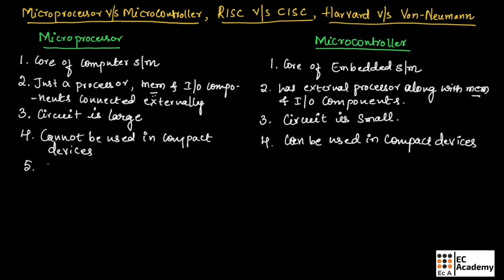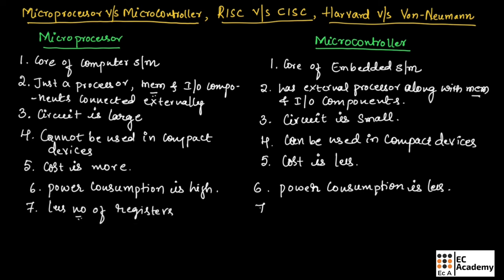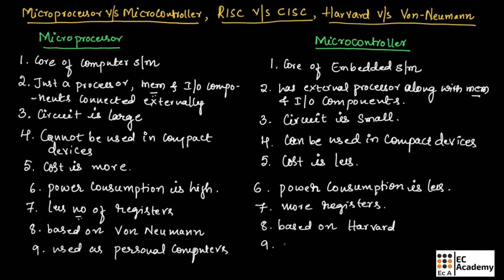The cost of the entire microprocessor system is more, while the cost of a microcontroller is less. Since memory and IO components are connected externally in a microprocessor, the overall power consumption is high. In a microcontroller, there are no external components connected, which is why power consumption is very less. Microprocessor consists of fewer registers and microcontroller consists of more registers. Microprocessor is based on Von Neumann architecture and microcontroller is based on Harvard architecture. Microprocessors are mainly used in personal computers, while microcontrollers are mainly used in application-specific systems like washing machines and MP3 players.